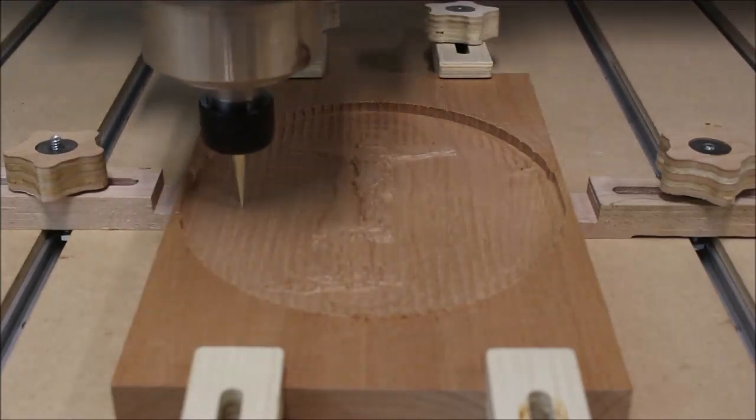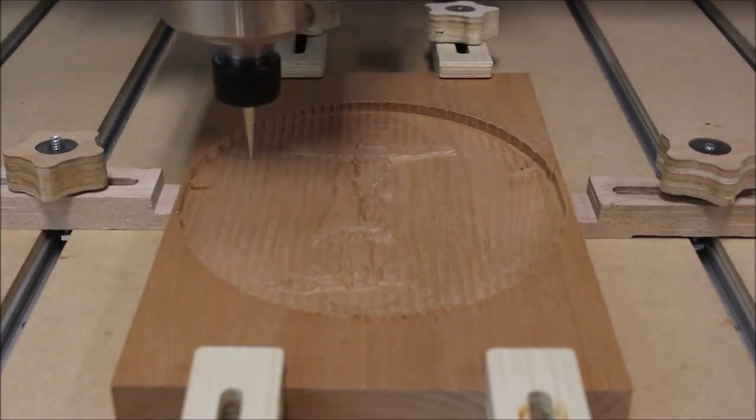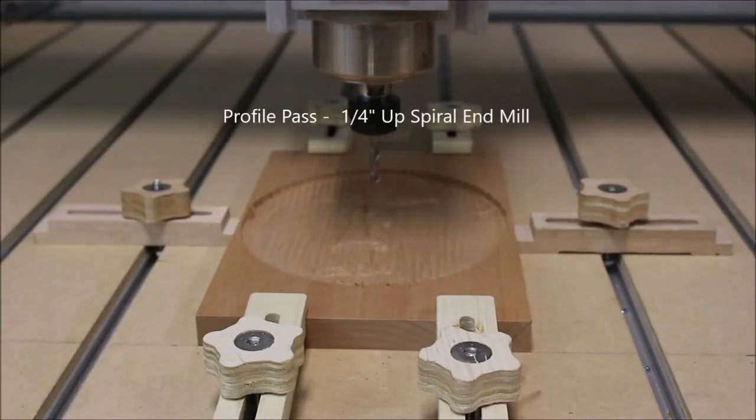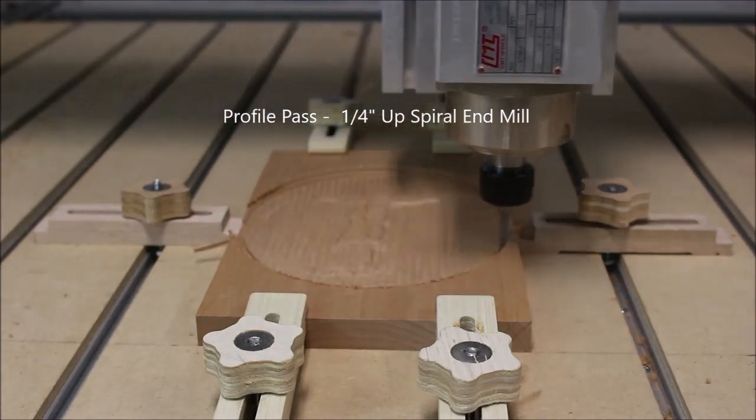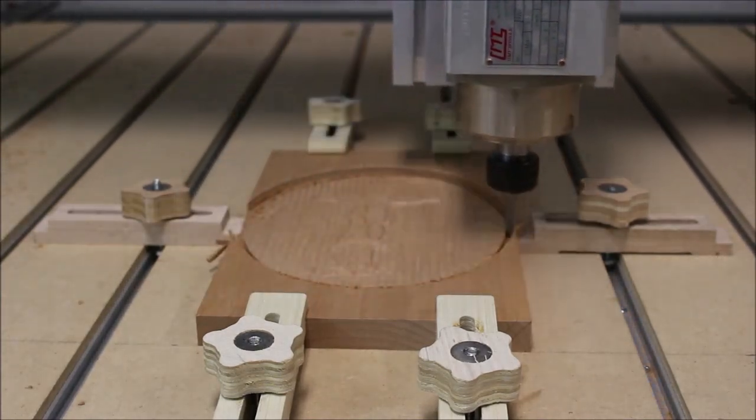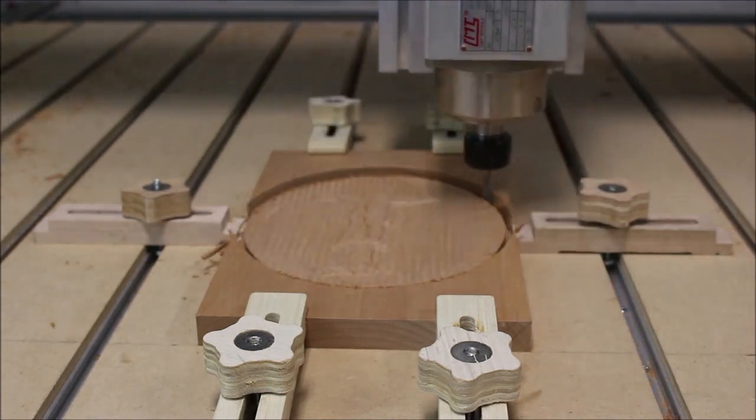The total time to run all four tool paths, including bit changes, was right about five and a half hours. For the final profile pass, I didn't use any tabs. I just only went down until there was about seventy thousandths of material left, and then I cut it out on the bandsaw and used a flush trim bit.